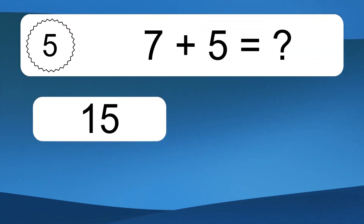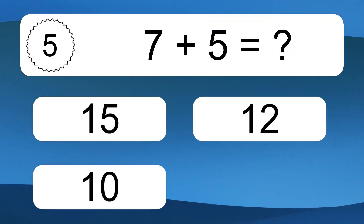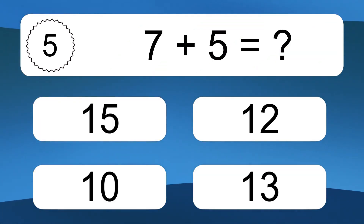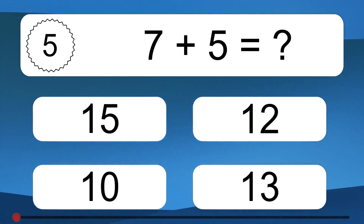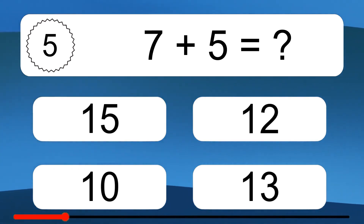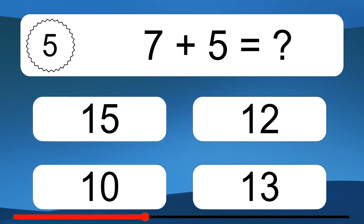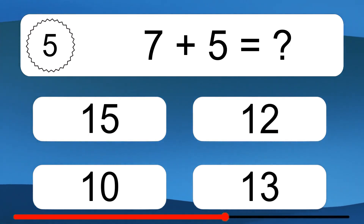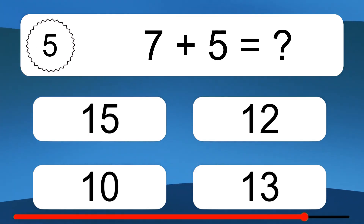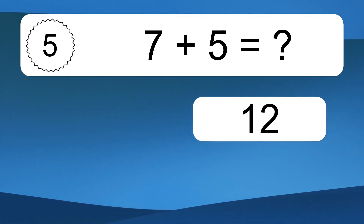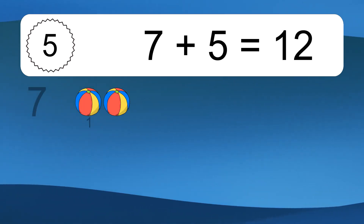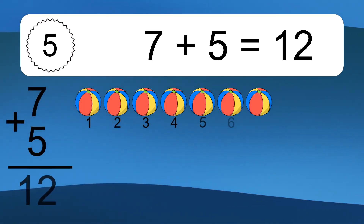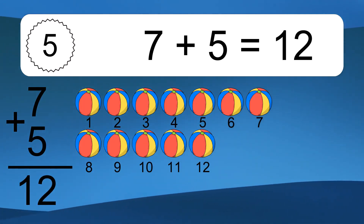7 plus 5 equals what? 7 plus 5 equals 12.